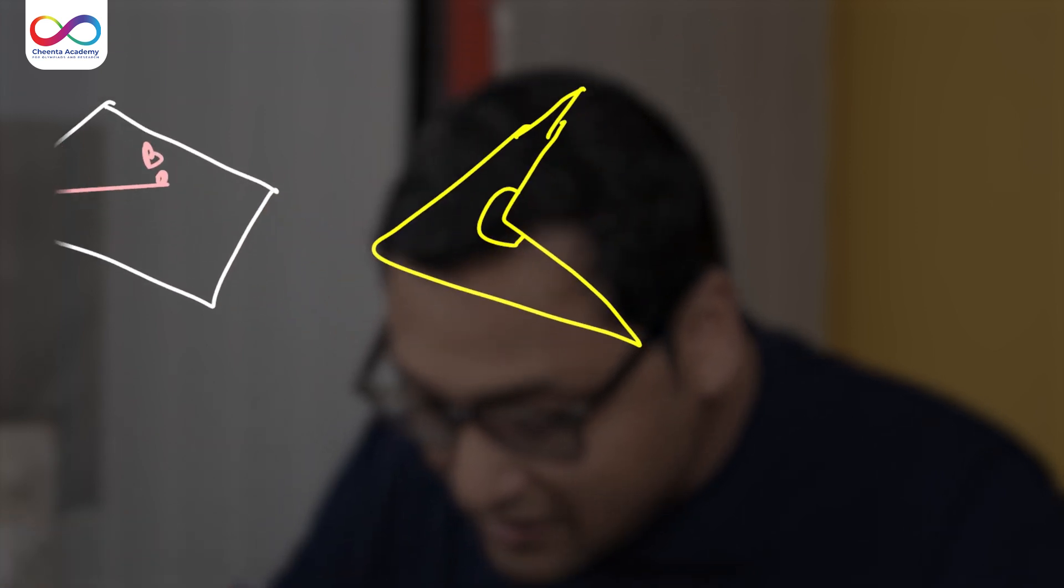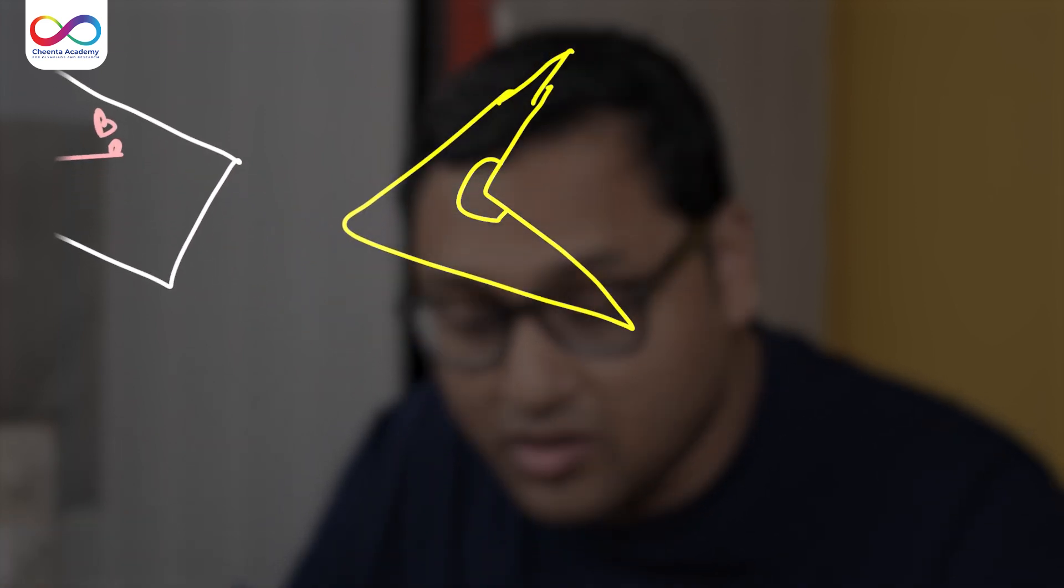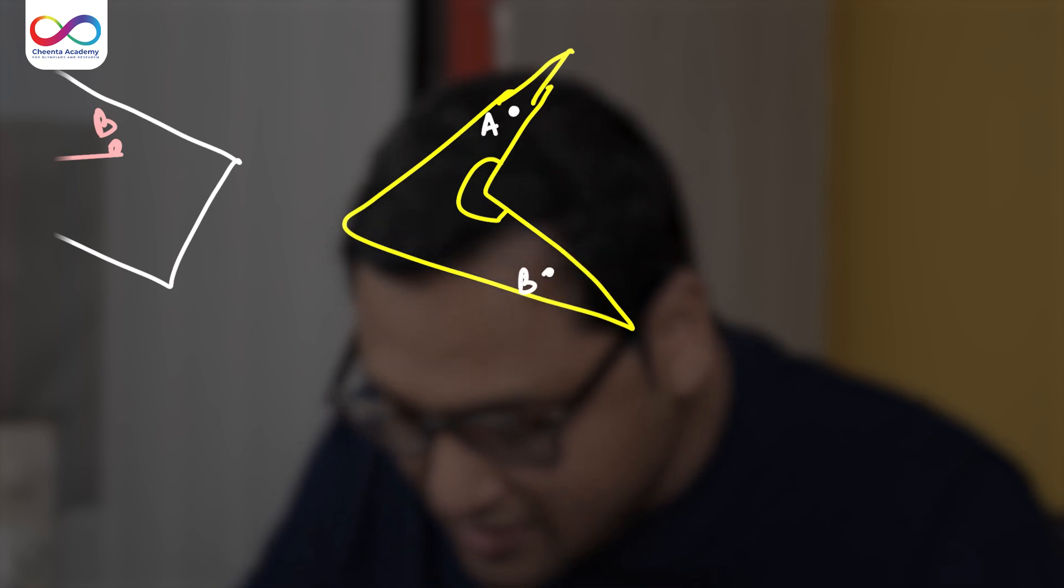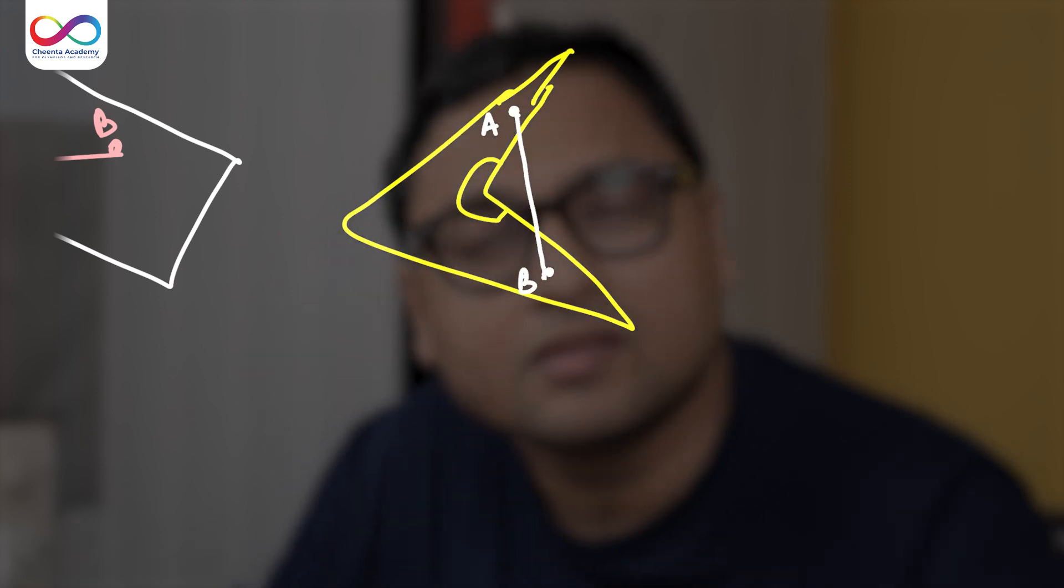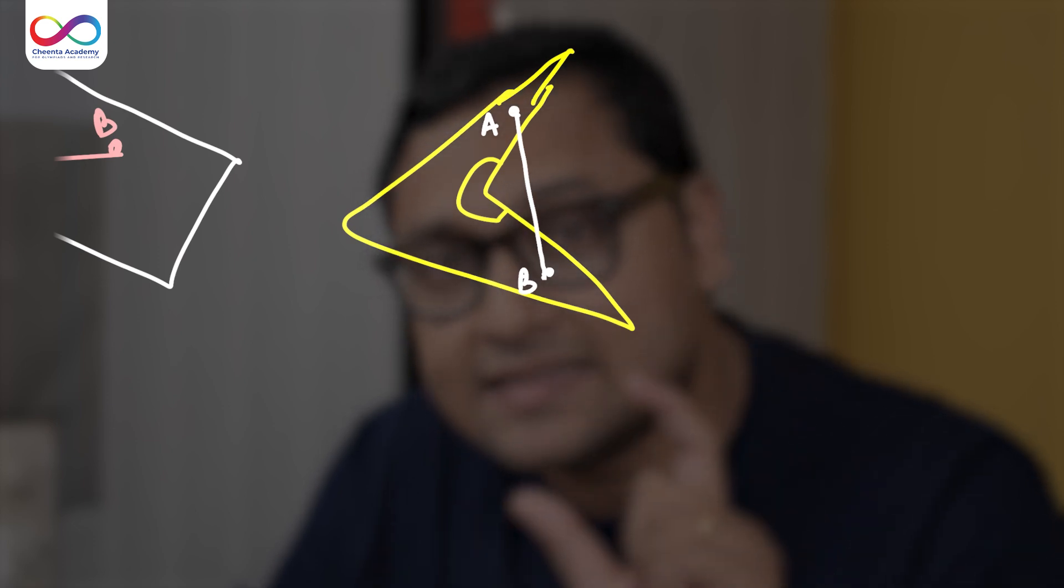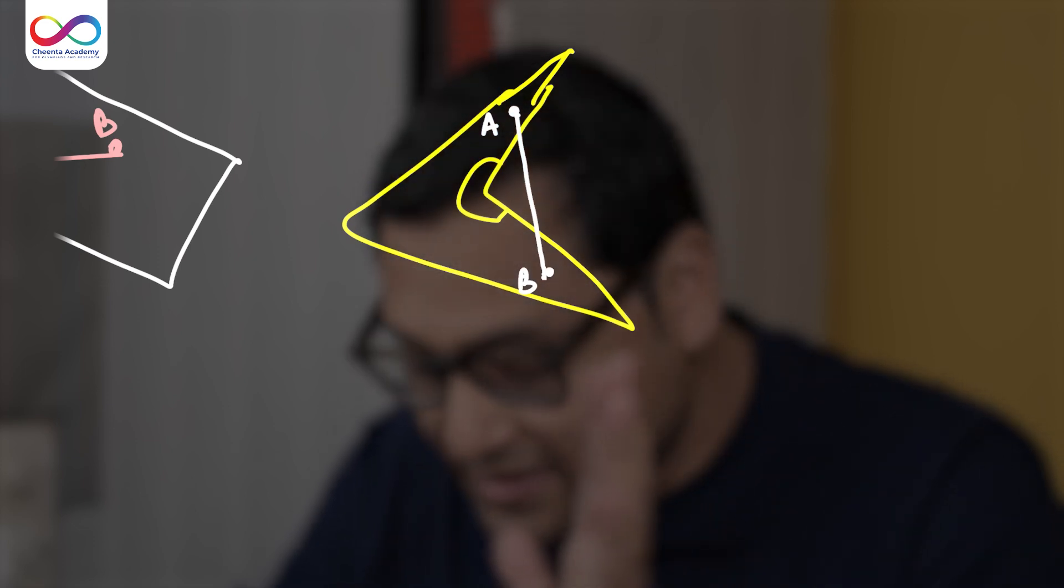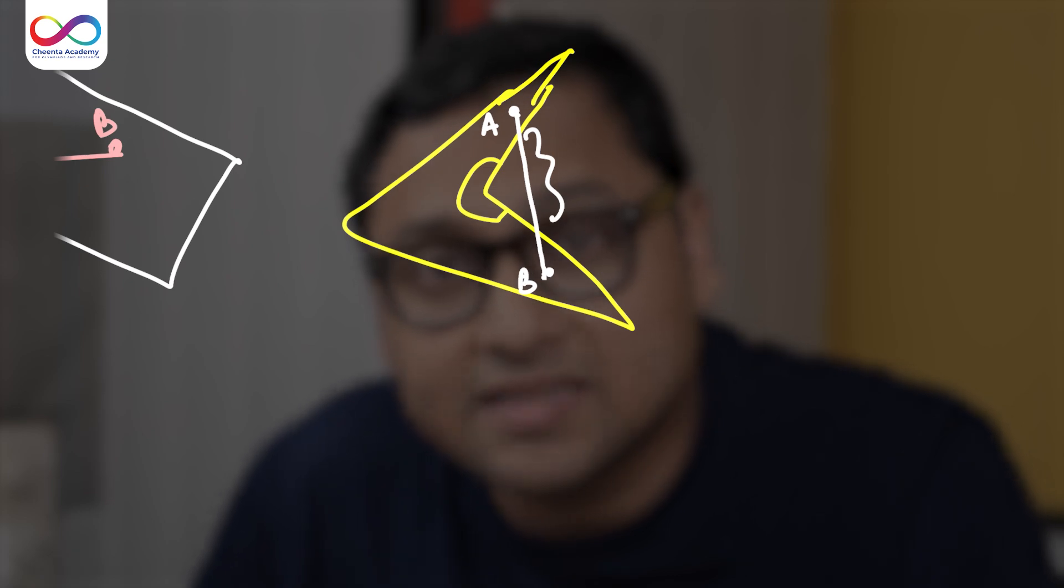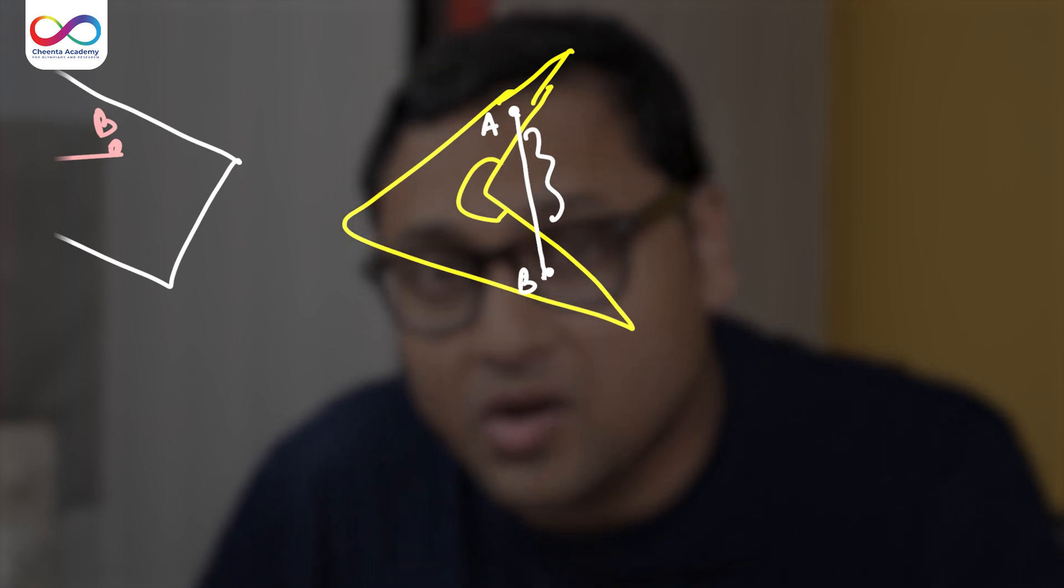But in this other concave polygon, this will not happen. So if I take this point A and if I take this point B, if I join it, that particular line segment, partly this part is outside the polygon. So this is not a convex polygon anymore. It's a concave polygon.